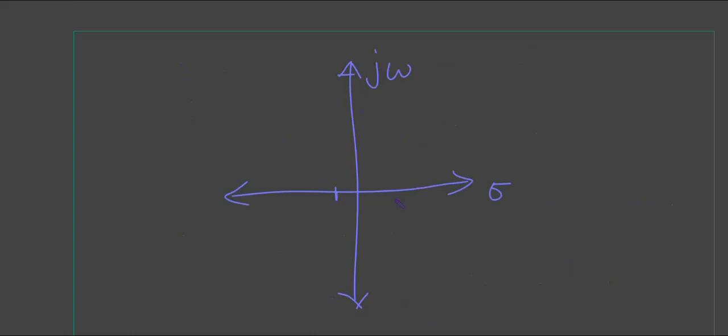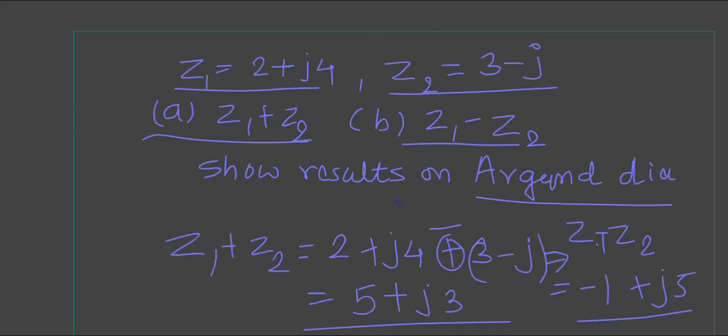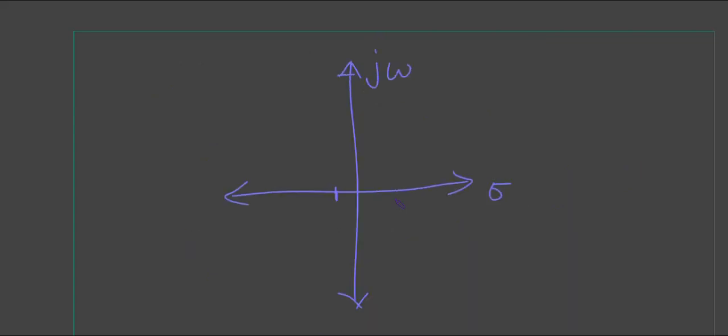This is -1. Now you have to trace these two coordinates and this will be the result. This point is -1+j5.